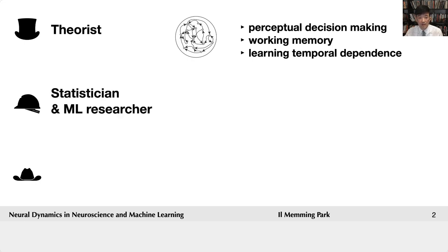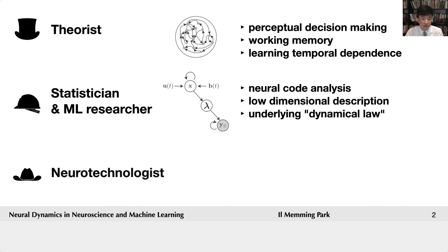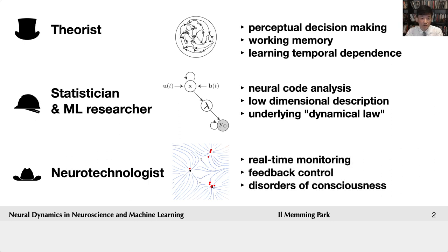As a statistician and a machine learning researcher, my goal is to build advanced data analysis methods specifically designed for neural time series that reflect the underlying neural dynamics and computation. I'm interested in inferring low-dimensional population state evolution and the underlying dynamical law associated with behavior of individual neurons and also the population activity. And as a neurotechnologist, I develop tools that can both help experimentalists and biomedical engineers. I am interested in tackling real-time monitoring and control of neural population states and also interested in disorders of consciousness.